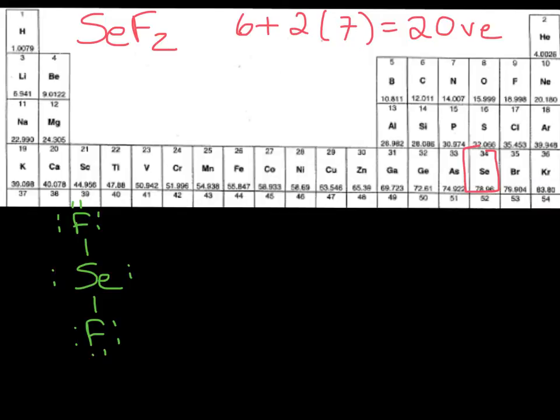So what's the steric number for selenium then? We want to look at the steric number for the central atom, and the steric number is 4. Because we have 2 lone pairs, and we have 2 bonded atoms. So overall, the steric number is 4.